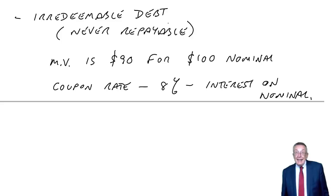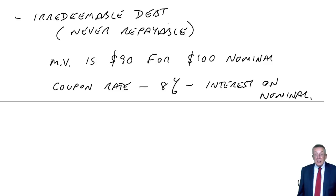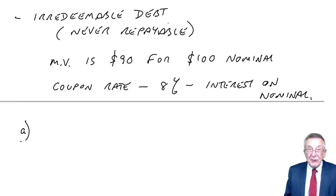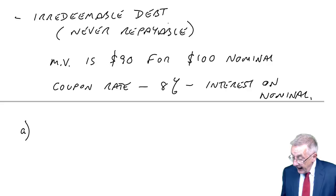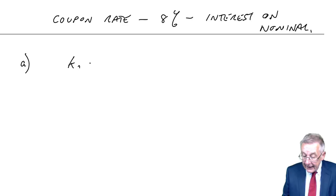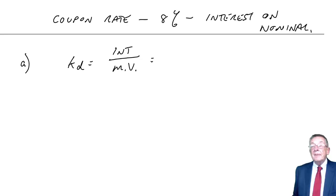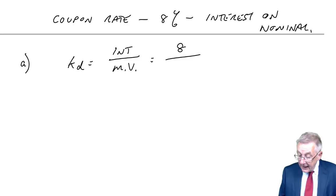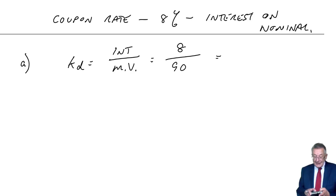Well, first of all, the question says, what is the return to investors? You're getting 8% on nominal. But the actual return you're getting, you would pay 90 today. Then you'll get $8 a year forever. So just like equity with constant dividends, the return to investors, or KD, is the interest on market value. You're getting $8 a year on a market value of 90. You're therefore getting the return of 8 on 90, currently 8.89%.